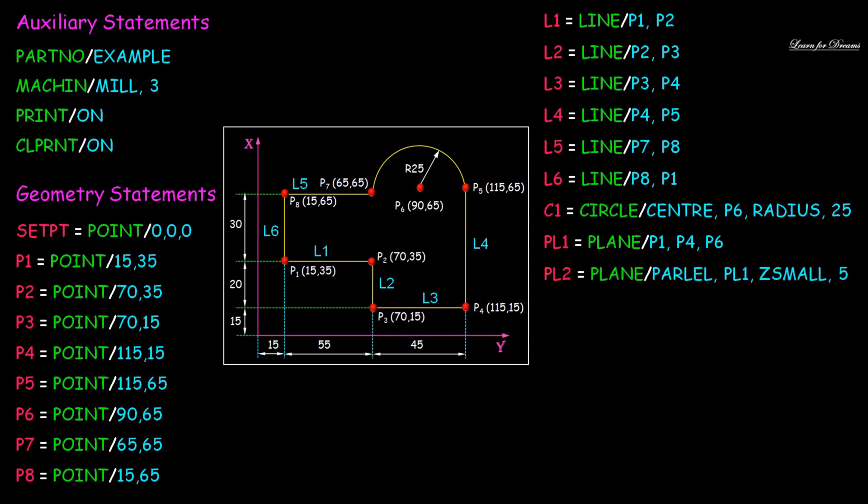Then we will define the circle C1. Its center point is P6 at 90,65 and radius is 25. Here we will define two planes. Top plane PL1: plane P1, P4, P6. The plane is defined using three points only.